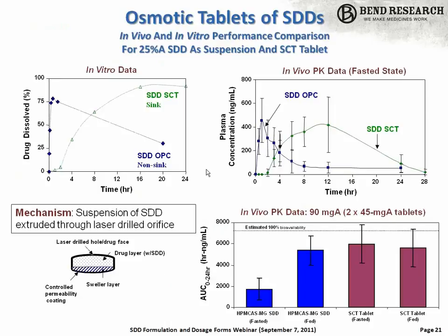Here is some in vitro and in vivo data using a swallowable core tablet with STD compared to a suspension. The in vitro data shows rapid dissolution for the suspension versus much more controlled, slower dissolution for the tablet — noting that the tablet data was measured under sink conditions while the suspension was in non-sink. The corresponding in vivo dog data with a 25% active HPMCAS dispersion shows fairly rapid absorption and elimination for the suspension STD versus a quite a bit longer absorption profile for the tablet STD. It's a nice technology when you need that combination of solubilization and controlled release, particularly at fairly low doses.